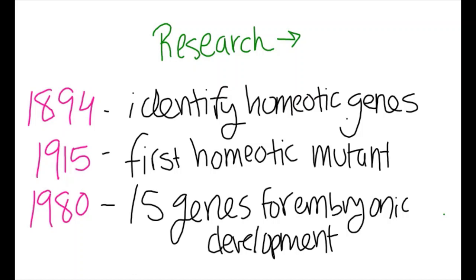Such research laid the foundations for Edward Lewis, Christiane Nüsslein-Volhard, and Eric Wieschaus to identify and classify 15 genes of importance in the genetic control of embryonic development within the fruit fly Drosophila melanogaster in 1980.